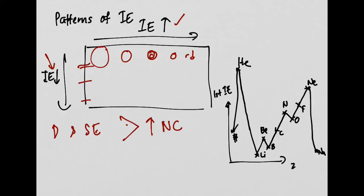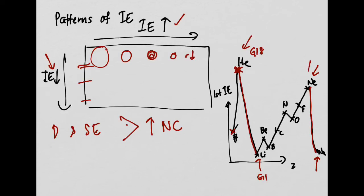Looking at a graph of first ionization energy against atomic number, you can see sudden increases followed by big drops. The highest points before each drop correspond to group 18 (noble gases), and the lowest points at each drop correspond to group 1. So by identifying where the big drop occurs — from the highest ionization energy — we can determine that those peaks are group 18 and the elements after the drop are group 1. We can also identify group 17 as just before the group 18 peak.